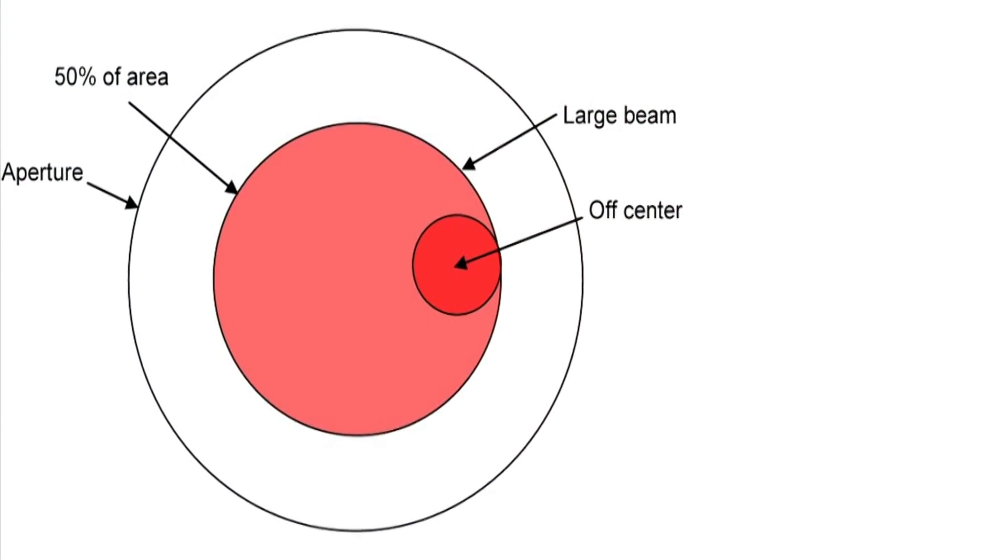One of the other possible errors is uniformity over the sensor. When we calibrate the sensor, we center the beam and we have a beam size that is not large. It's usually no more than one-third of the aperture. Now what happens if the user wants to measure with a very large beam or a beam that's off towards the side? That gives you an extra error.